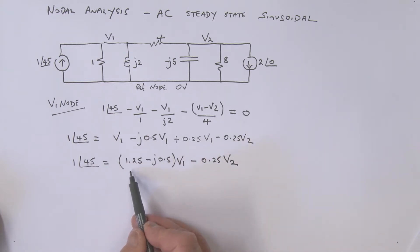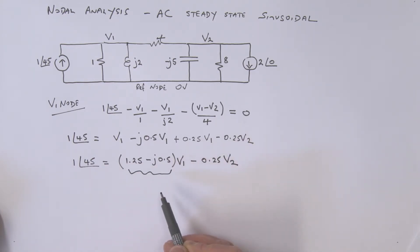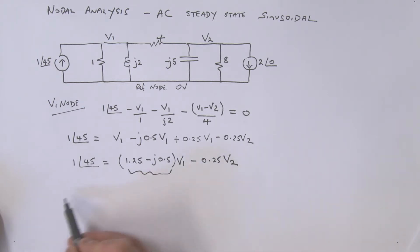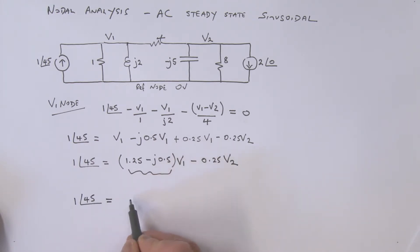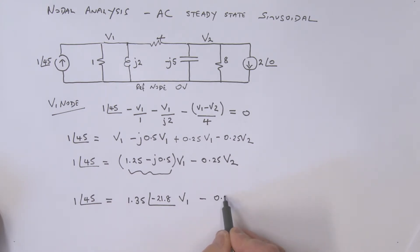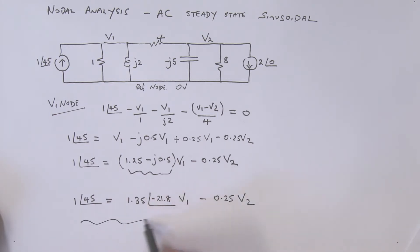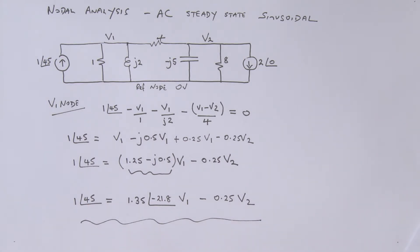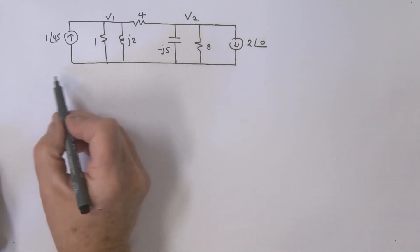Converting the v1 coefficient to polar form: 1 at an angle of 45° equals 1.35 at an angle of minus 21.8° times v1, minus 0.25 v2. That gives us our first equation in terms of v1 and v2.